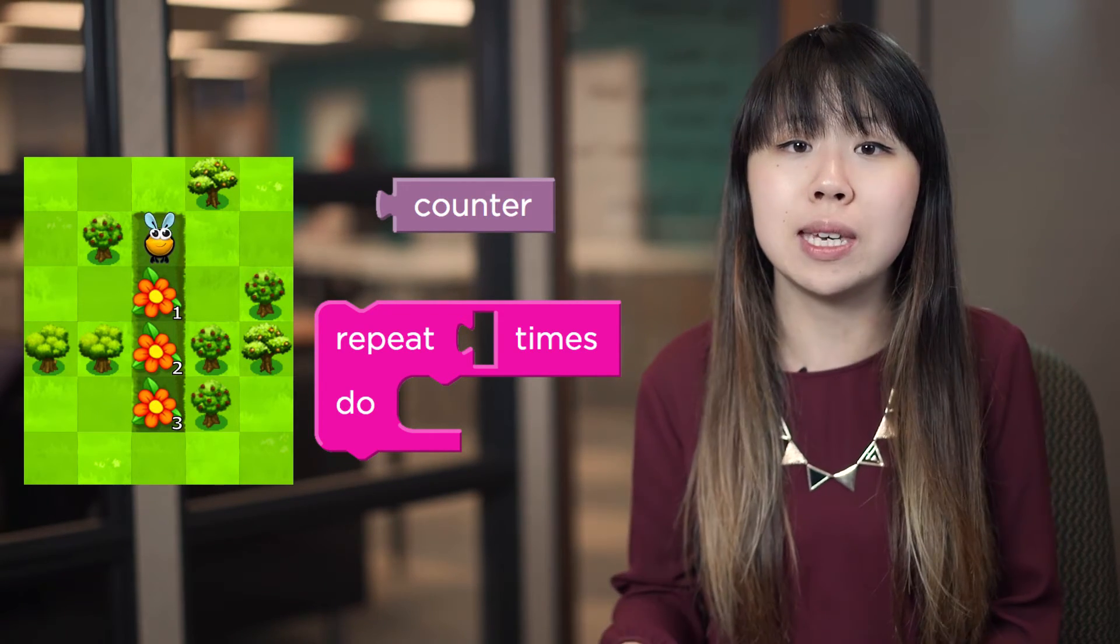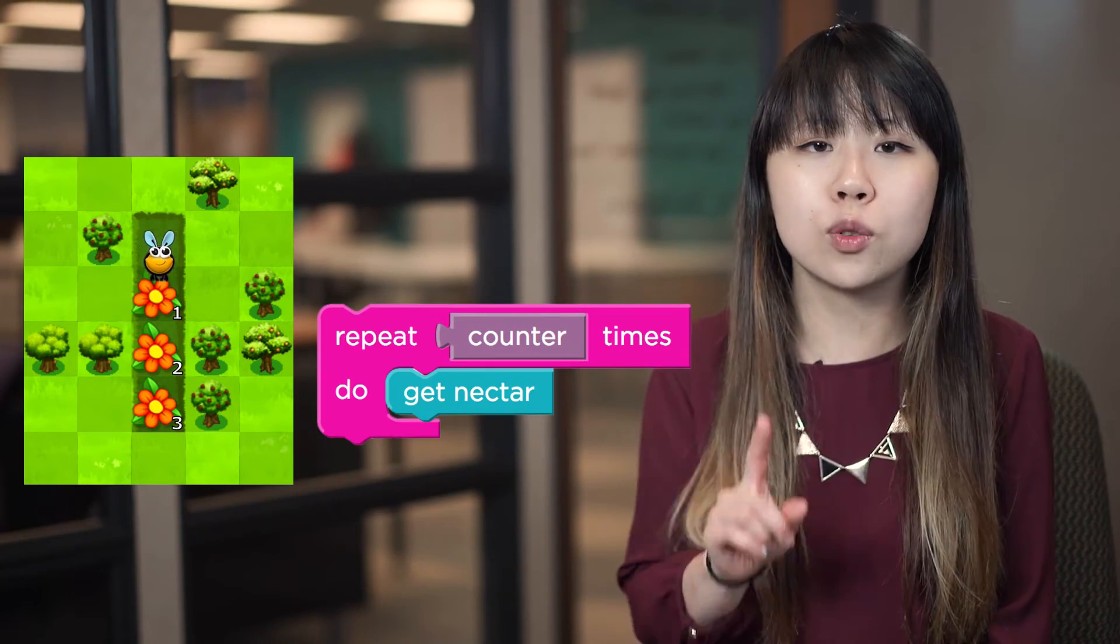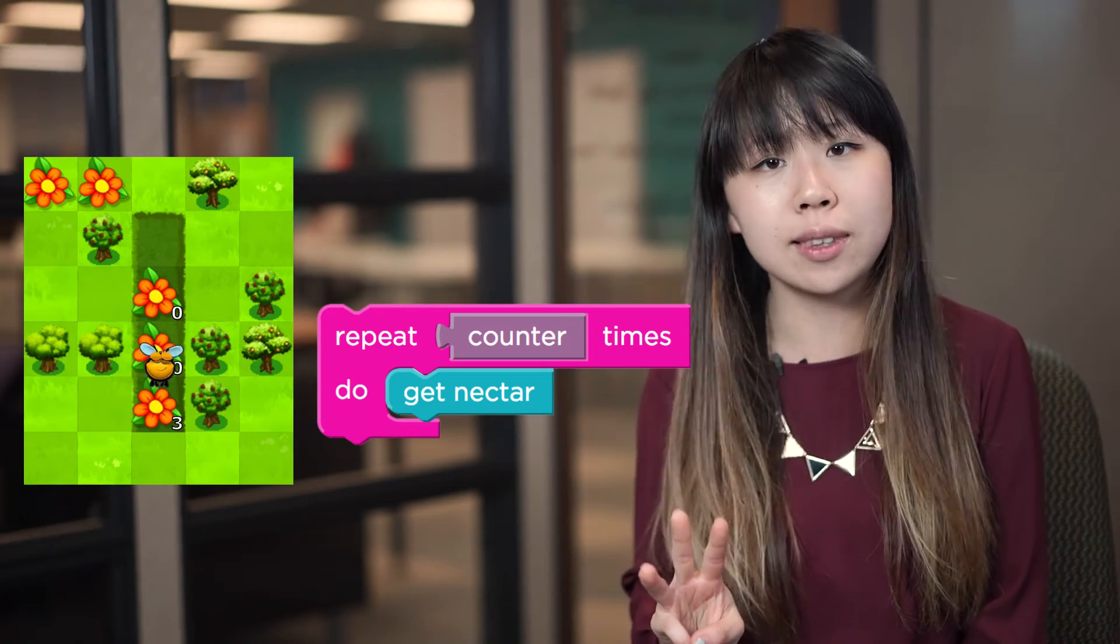I can use the for loop to tell the bee to collect counter nectars each time, which would collect one at the first flower, two at the second, and three at the third.